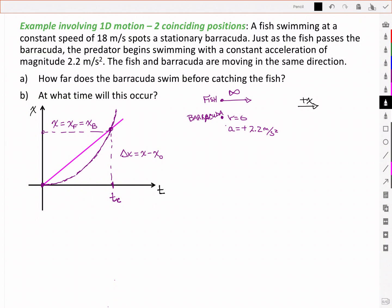Let's take down our inventory of what we have. So we've got a t0 equal to zero. At that point, the position of the fish is the same as the position of the barracuda.